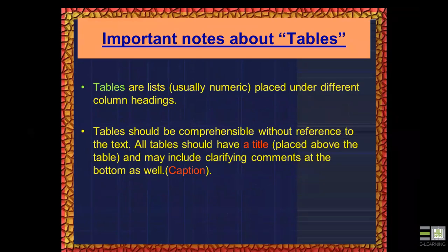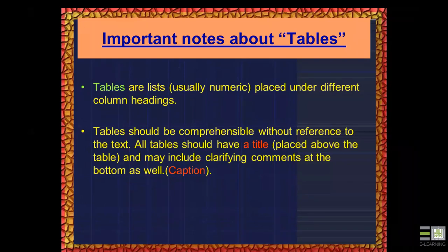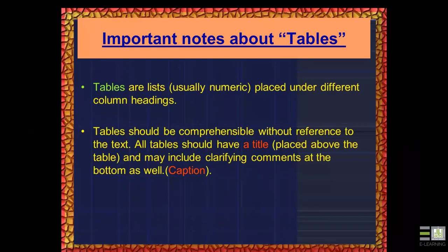Regarding tables: each table should be self-explanatory — a reader should understand it without going back to the text. Add only a brief comment of three to four lines maximum. The title goes above the table, and clarifying comments such as abbreviations or group definitions go below the table — these are called captions.